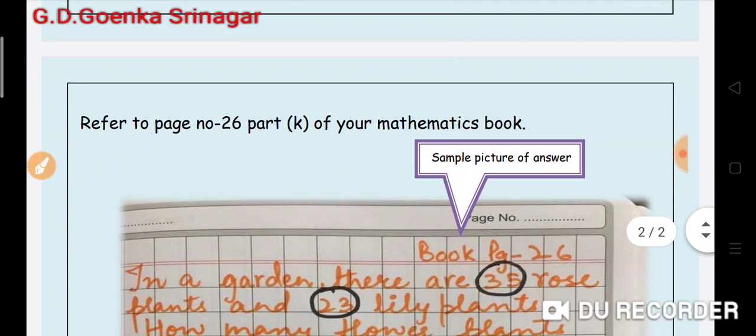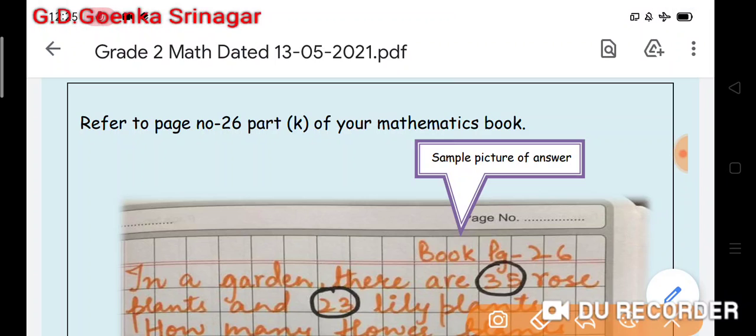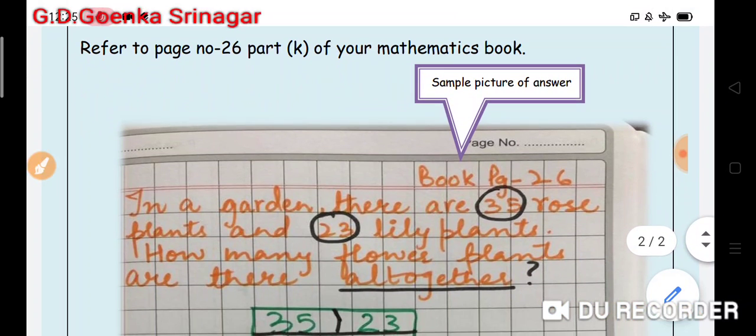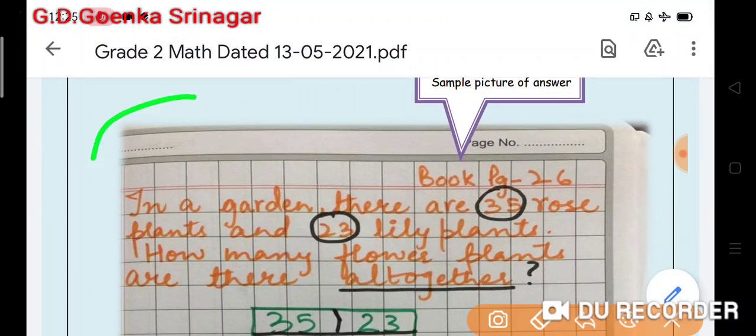Now, we have a question on our book page number 26 and we have to do the K part. Let us check the question and you have a sample picture here. You can do the question in the same way.